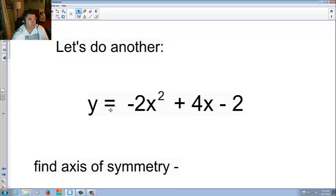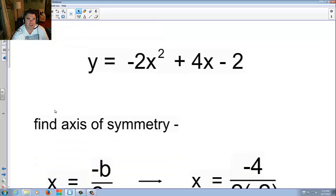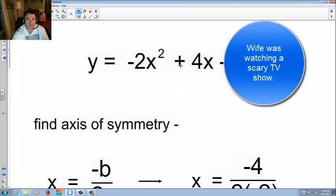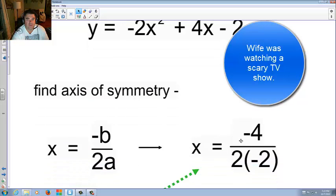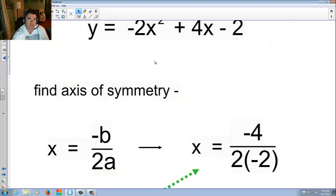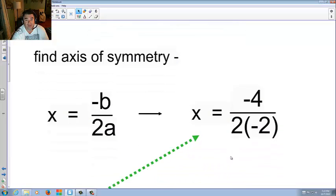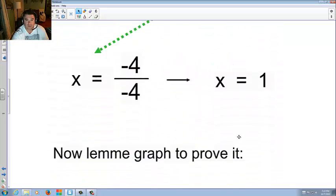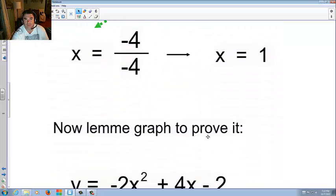Let's do another. Y equals negative 2x squared plus 4x minus 2. Find the axis of symmetry, so you have negative 4, and then 2 times negative 2, so you still have negative 4. But now 2 times negative 2 makes negative 4. Negative 4 divided by negative 4 equals 1.